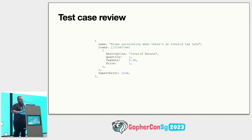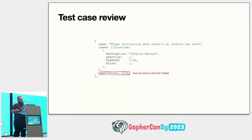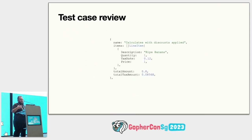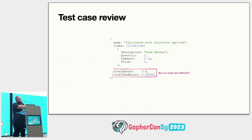Then we have invalid bananas — I'm not entirely sure how bananas get invalid, but here we are. The tax rate is 66%, which doesn't sound very fun. We can see that we expect an error. But why? Why is 66% invalid? It could be a fair price. Let's continue. Here we have another case: a ripe banana with a discount on it. It has a price, but the totals are different. There's nothing in this test that tells me why this price shouldn't be the same as the previous one.